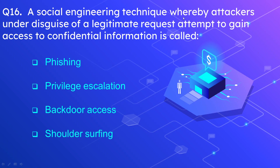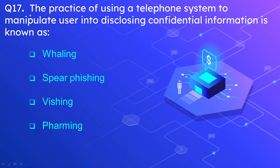Question number 16: A social engineering technique whereby attackers, under the disguise of a legitimate request, attempt to gain access to confidential information is called what? The options are phishing, privilege escalation, backdoor access, and shoulder surfing. The correct option is phishing. For Question 17, since it involves a telephonic system using voice conversation, the attack is launched through voice — so vishing, or voice phishing, is the correct option.